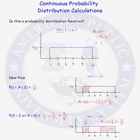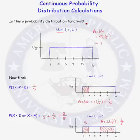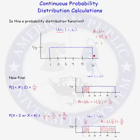In summary, to determine whether a curve is a probability distribution function, you must answer two questions: is the function non-negative, and is the area under the curve equal to 1? If you have a probability distribution function, you can answer probability questions by finding the area under the curve in the region of interest. We can do this for geometrically simple functions; when functions are more complex, you need calculus to find the area, which is beyond the scope of this course.